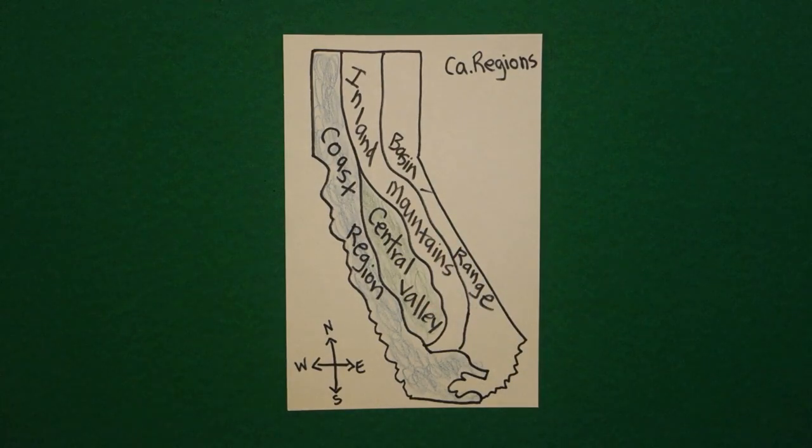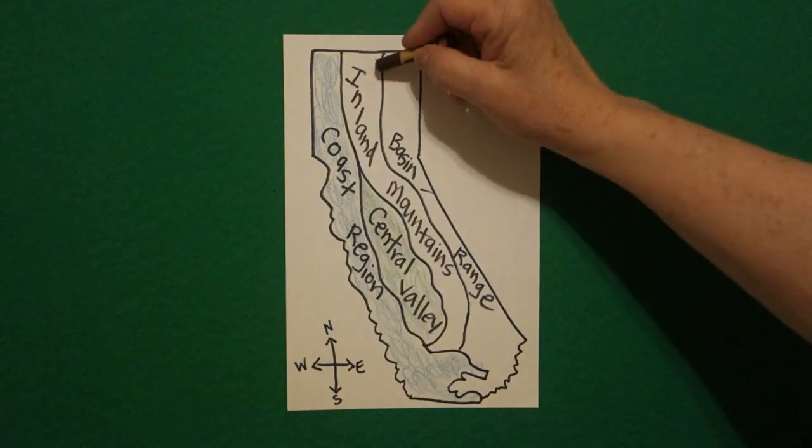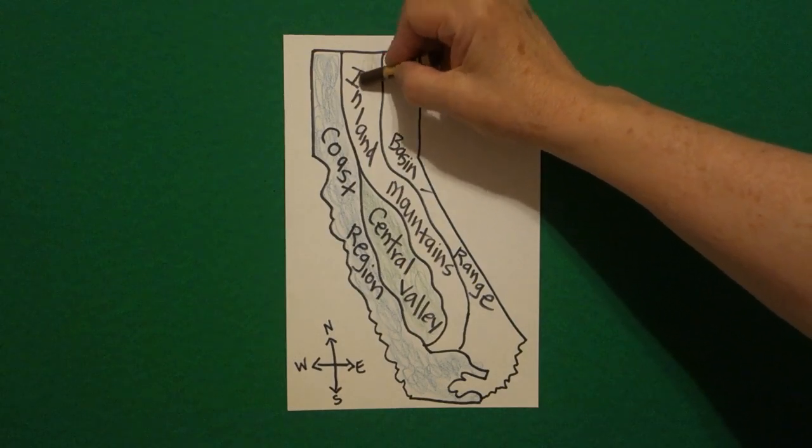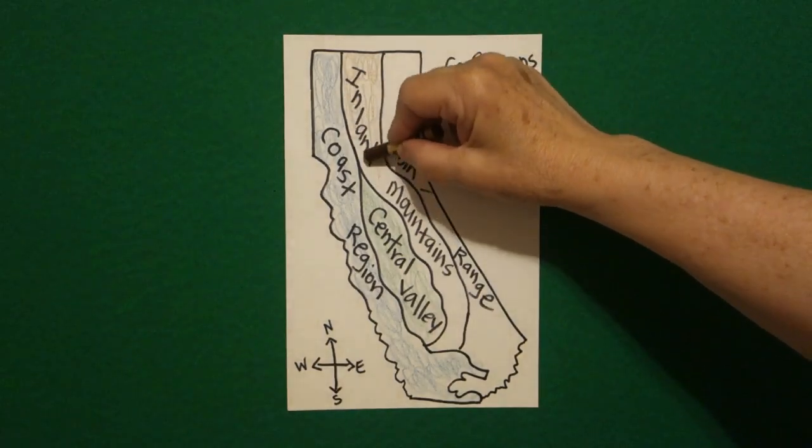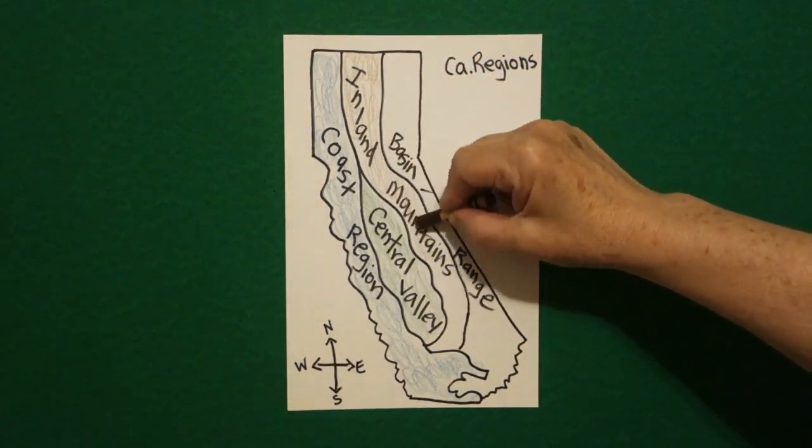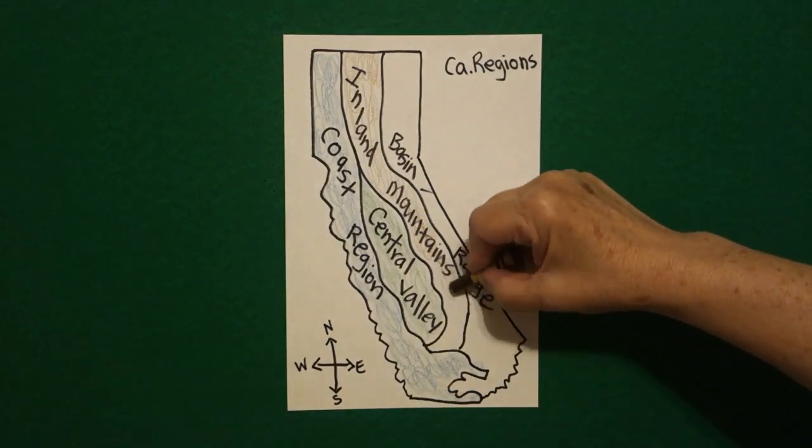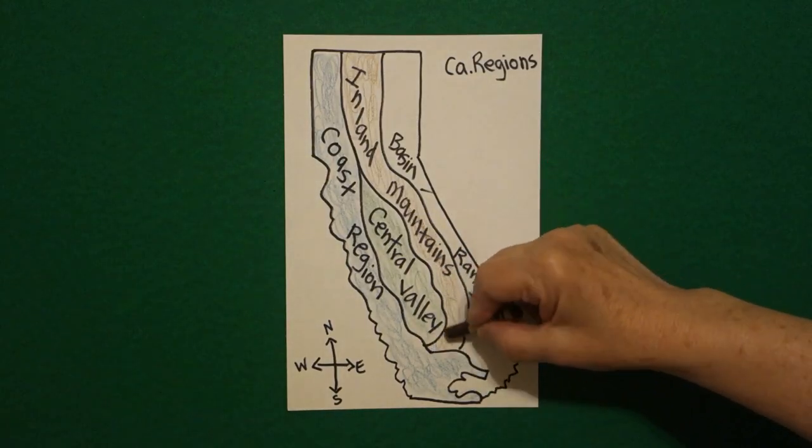Next, inland mountains. I'm going to do this a light brown. North to south. All the way down. Color lightly. You don't want to go over your lettering and not be able to read what you wrote.